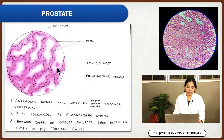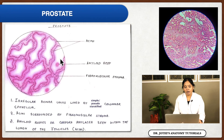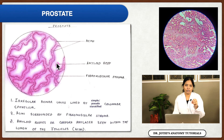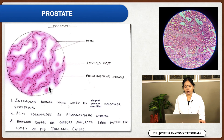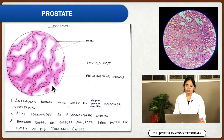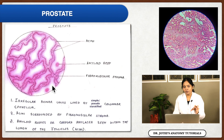The characteristic feature of the prostate gland is the presence of round structures called corpora amylacea, or amyloid bodies. Corpora amylacea are a characteristic feature of the prostate gland and are a sign of old age — they increase with age. The irregular acinar units are lined by simple or pseudostratified columnar epithelium, the mucosa is thrown into folds, and the stroma is fibromuscular. These are the important things to know about the prostate.